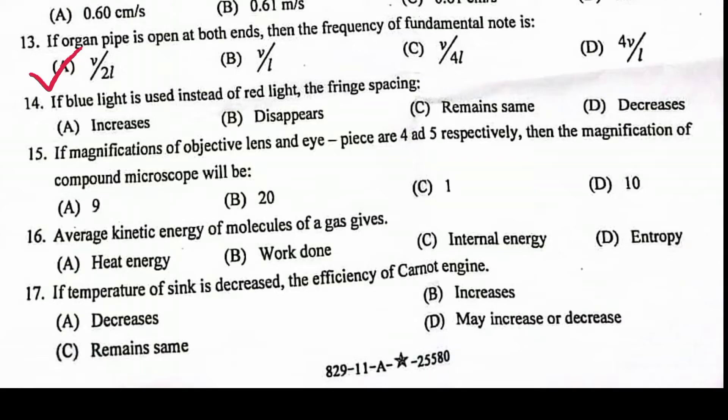If blue light is used instead of red light, the fringe spacing decreases. If magnifications of objective lens and eyepiece are 4 and 5 respectively, then the magnification of compound microscope will be 20.